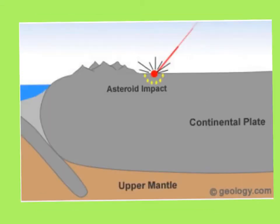Diamond formation at impact sites: throughout its history, Earth has been repeatedly hit by large asteroids. When these asteroids strike the Earth, extreme temperatures and pressures are produced. For example, when a six-mile-wide asteroid strikes the Earth, it can be traveling at up to 9 to 12 miles per second. Upon impact, this intense speed would produce an energy burst like many nuclear weapons and temperatures hotter than the sun's surface.